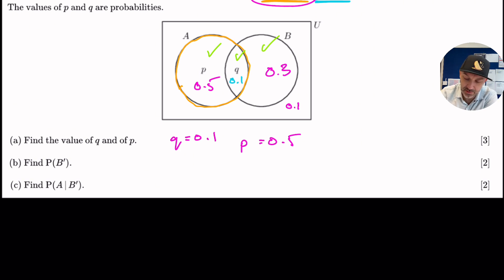Find not B. So that means nothing to do with B. So that means that we do not want to count anything inside B. So everything outside of B is 0.5 plus 0.1 is 0.6. Let's write that down there, 0.6.